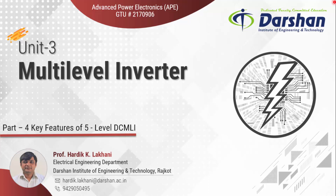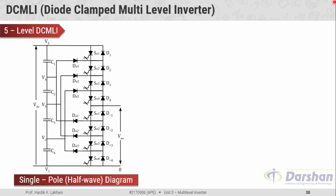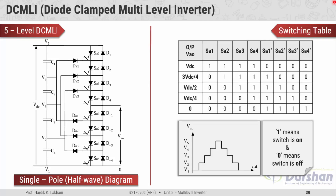In part 4, important observations and key features of the 5-level diode clamp multilevel inverter are covered. To understand these easily, let us first have a glance at one leg of the 5-level DC MLI and the corresponding switching table as well as the waveform. In one leg of the 5-level DC MLI, we need four biasing capacitors, eight switching devices, eight main diodes, and six clamping diodes. We have used fewer clamping diodes to reduce the complexity in construction and to simplify the circuit diagram.